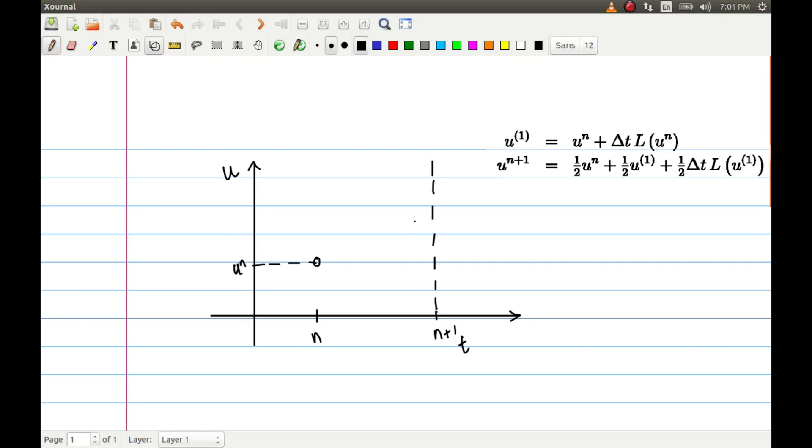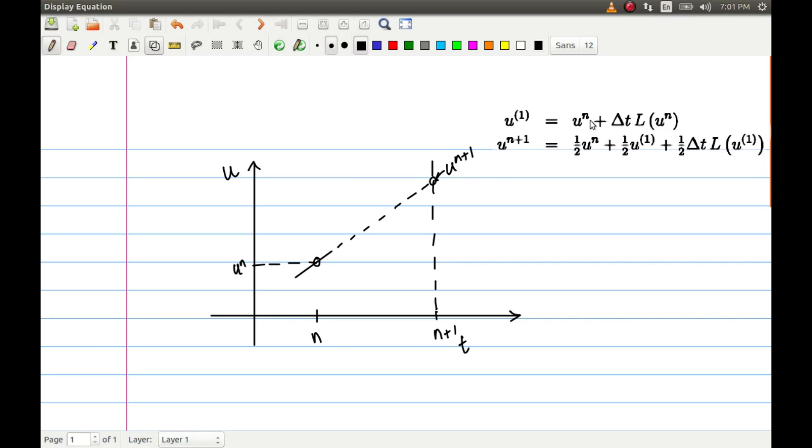If we are using Euler time integration, what we do is use the slope at this point, then we extrapolate this slope and go to this time level. We say that this is our approximate u^(n+1) using Euler integration.